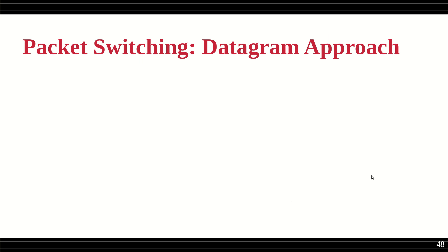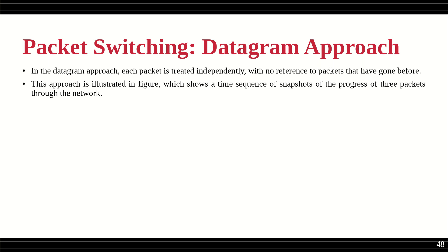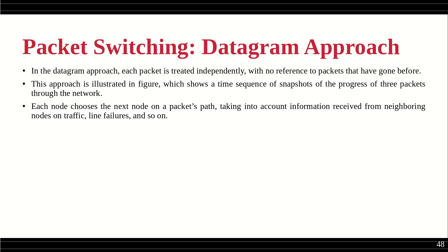Let's start our discussion with the datagram approach in detail. In the datagram approach, each packet is treated independently — packet three follows one route, packets one and two follow another route — with no reference to packets that have gone before. No packet follows any other; they are all handled independently. This approach is illustrated in figures showing a time sequence of snapshots of the progress of three packets through the network. Each node chooses the next node for a packet based on information received from neighboring nodes about traffic conditions and line failures.